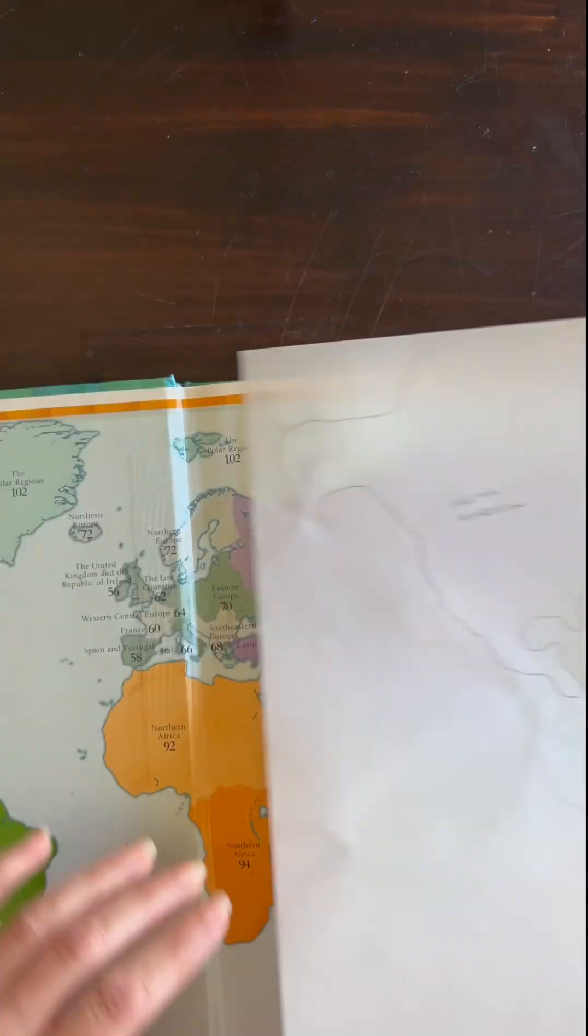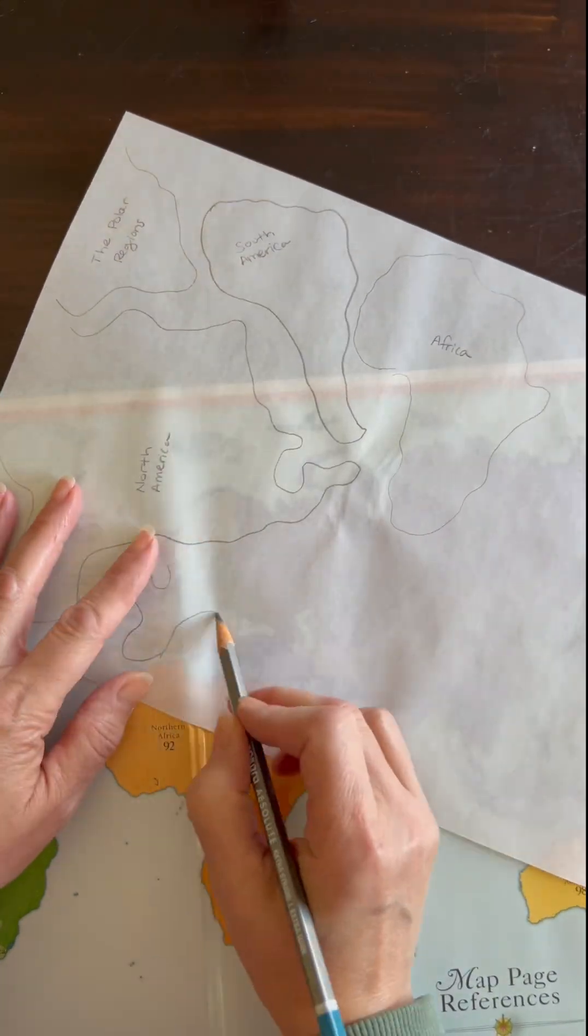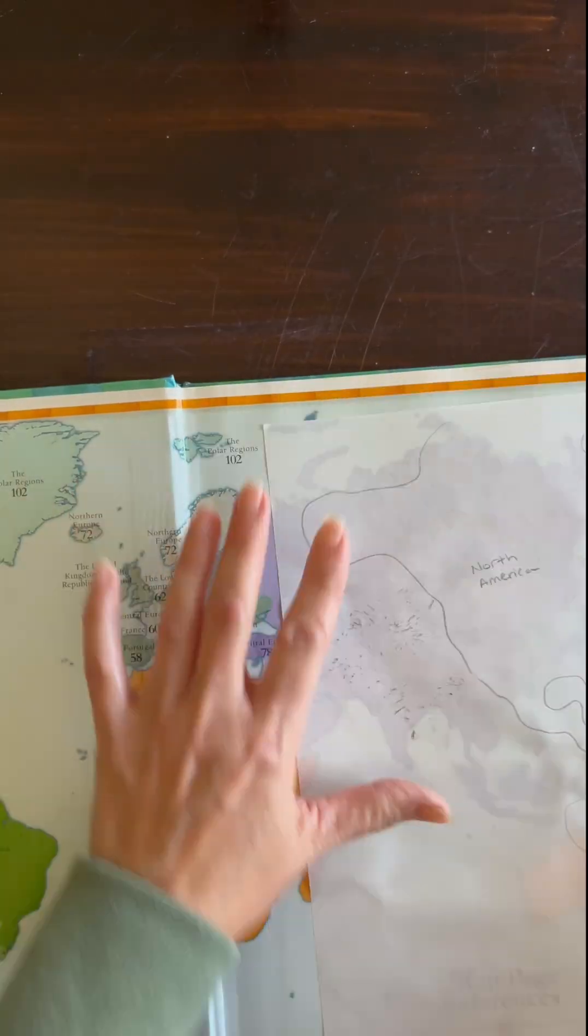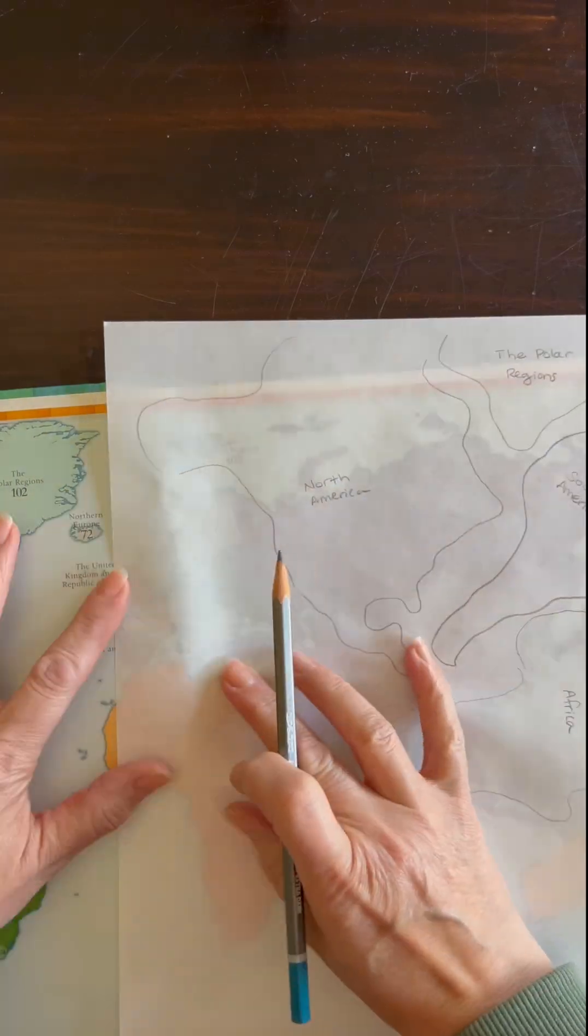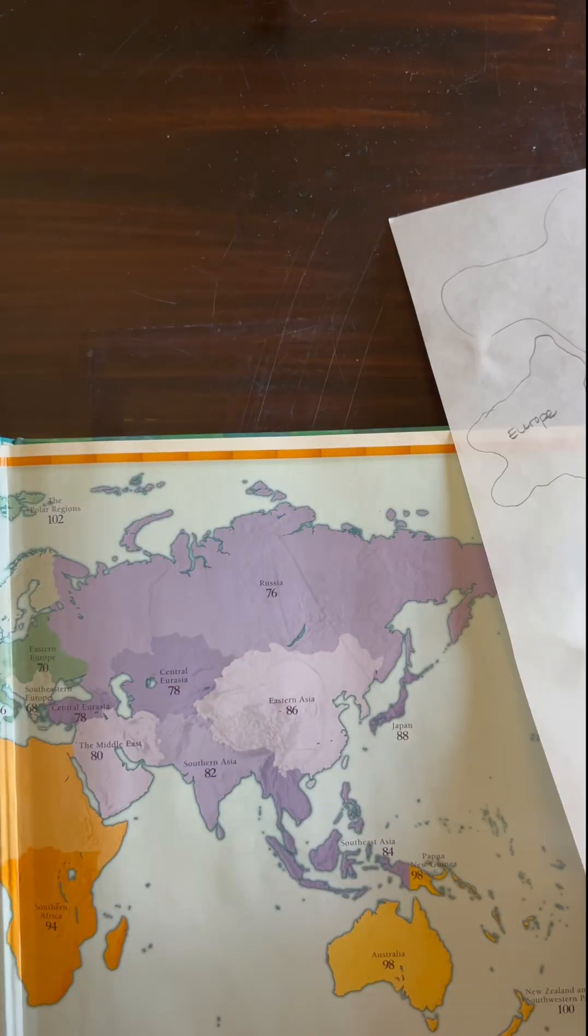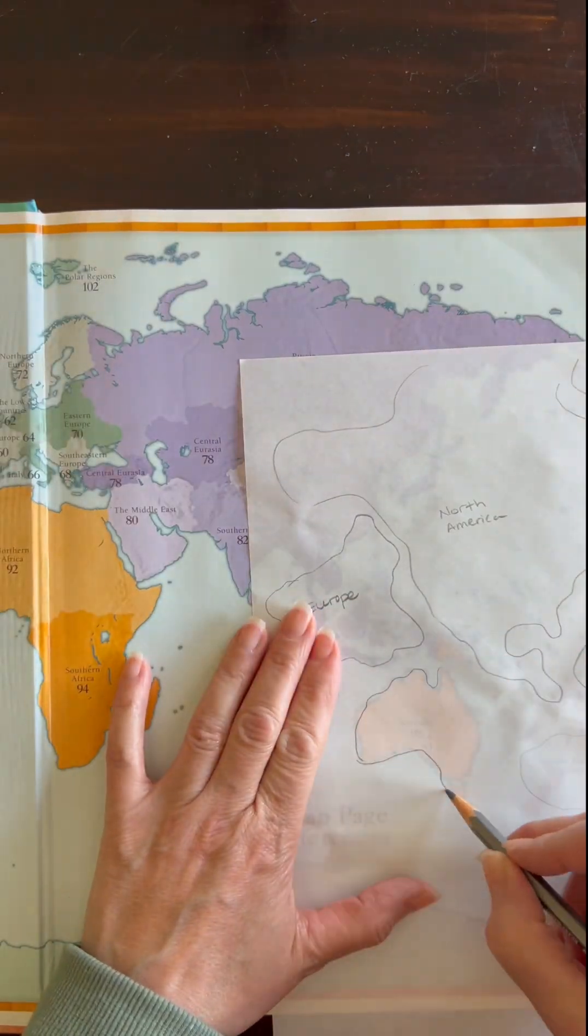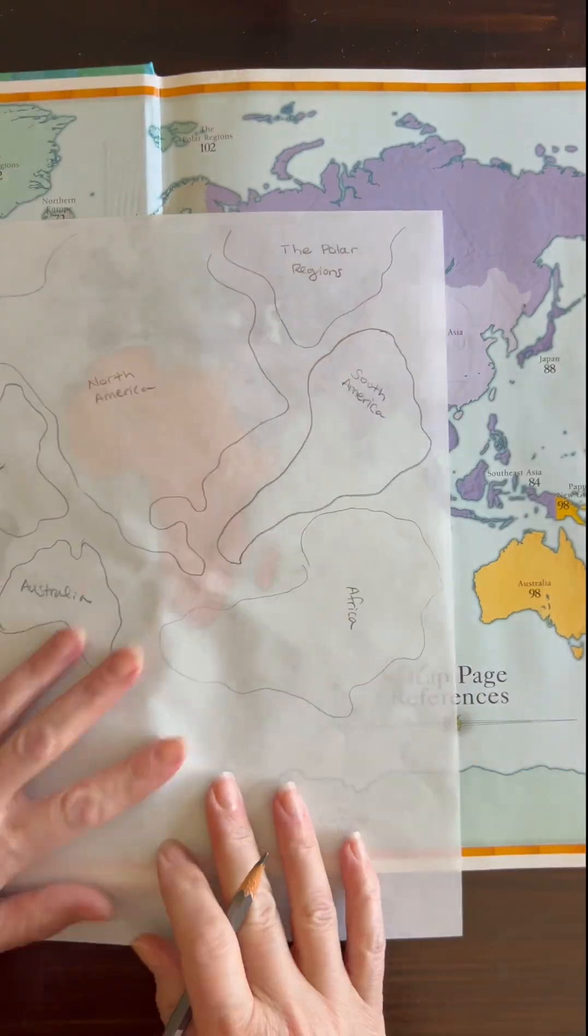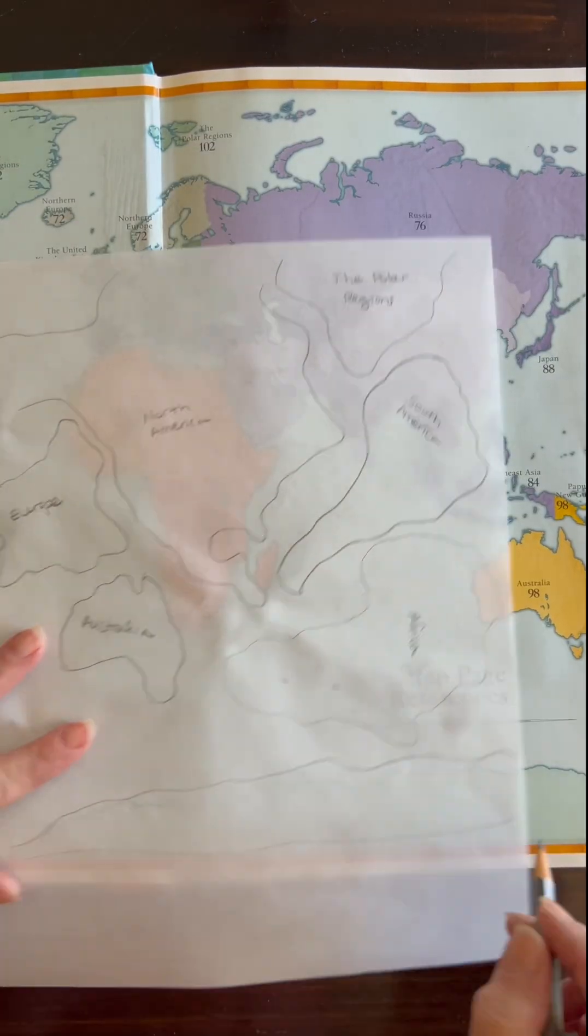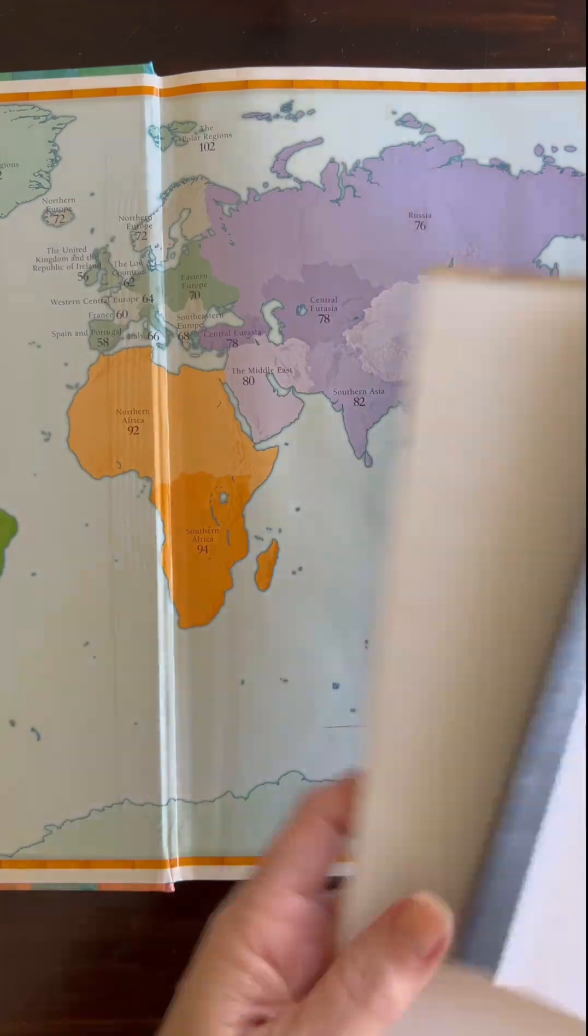I am tracing each of these continents and I am labeling them as I go. We've done this project in the past and labeling really helps. I do want them this size so they fit on a two-page spread in our main lesson book. Our main lesson book is 9 inches by 12 inches and we're going to be taking up two pages.